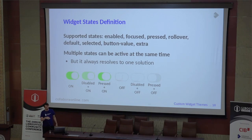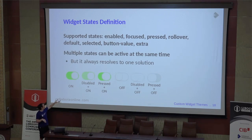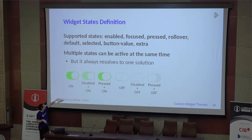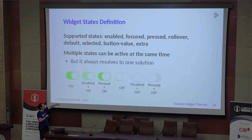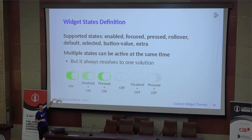For example, we have a checkbox: if it's enabled, it's drawn like this; if it's disabled and on, it's a little bit different; and if you press it, it's drawn differently. So all the states correspond to different SVGs that will be drawn.